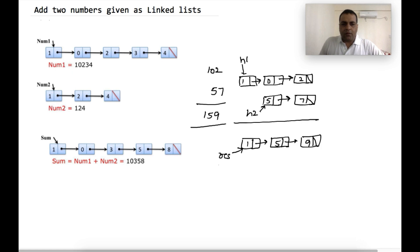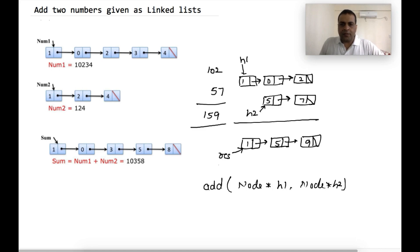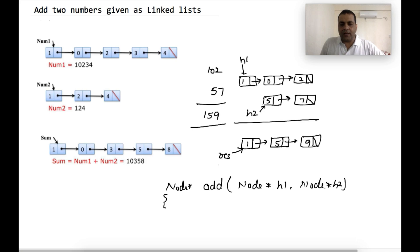Our function should accept two node pointers. The function is called add and it accepts node pointer h1 and node pointer h2. In the case of Java, it accepts two node variables h1 and h2 holding references to the first nodes of the first and second linked lists respectively. The function should return a node pointer pointing to the first node of the result linked list.